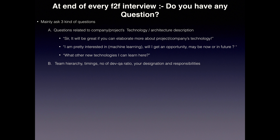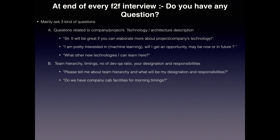The second type of question is related to team hierarchy, timing, number of developers and QA ratio, your designation, and responsibilities. For example: 'Please tell me about the team hierarchy and what will be my designation and responsibilities if I join this organization. Does the company provide flexibility for morning timing?' This kind of question signals to the interviewer that you are seriously thinking about joining, which shows you are a genuine candidate — not someone who will take the offer letter and join another company.